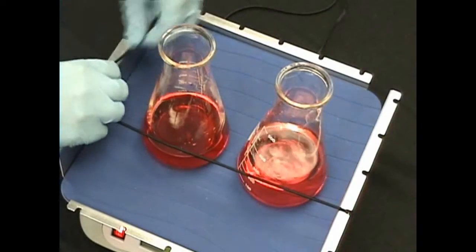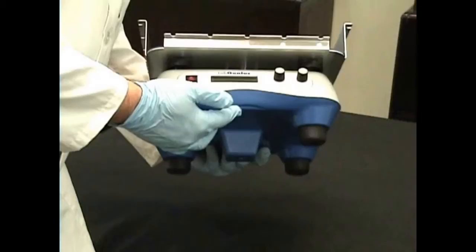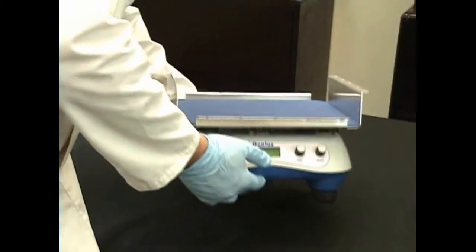Included elastic ties allow users to securely stabilize flasks, beakers, and other vessels. Soft rubber feet are designed to minimize walking.